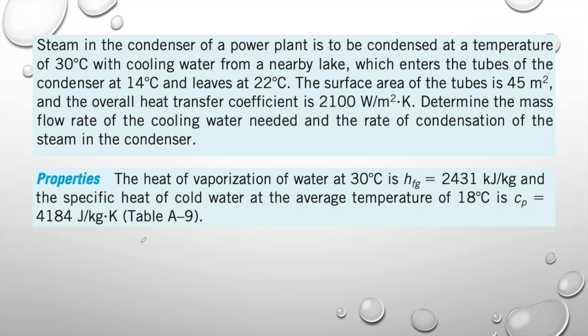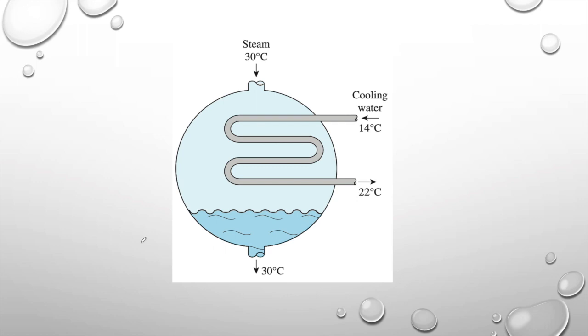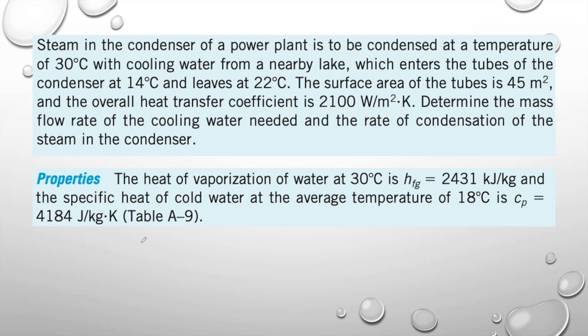Now let's look at the figure. The steam inlet is at 30 degrees Celsius. One thing you have to understand from CPPs — chemical process principles — is that when there is a phase change, what will happen? In the CPPs, we know there is a change of heat, change of temperature, change of pressure, and the last one is change of phase.